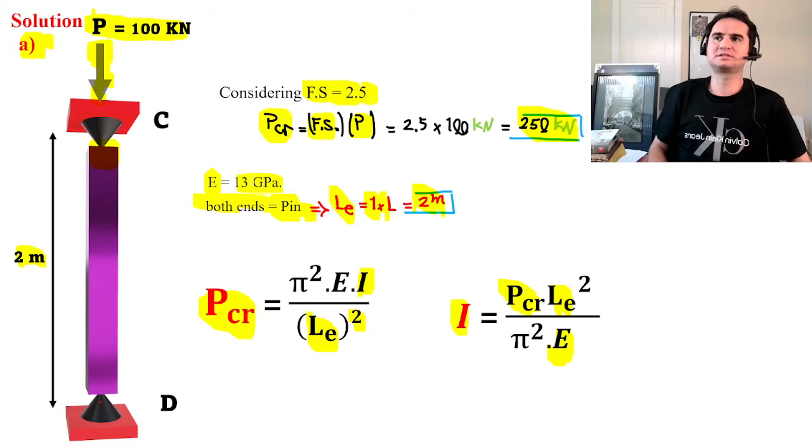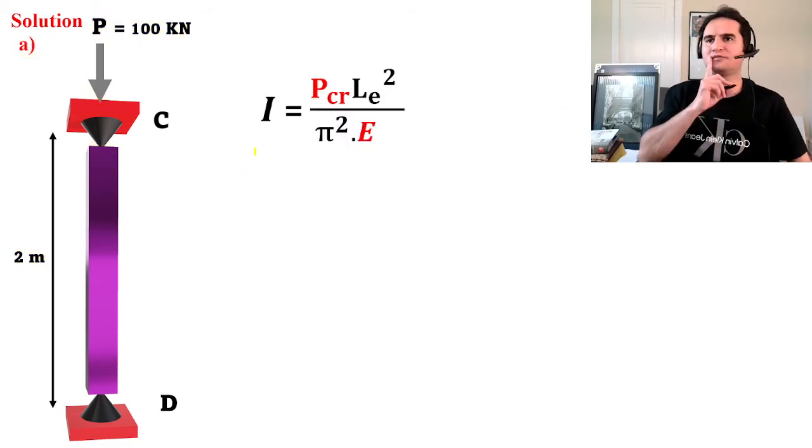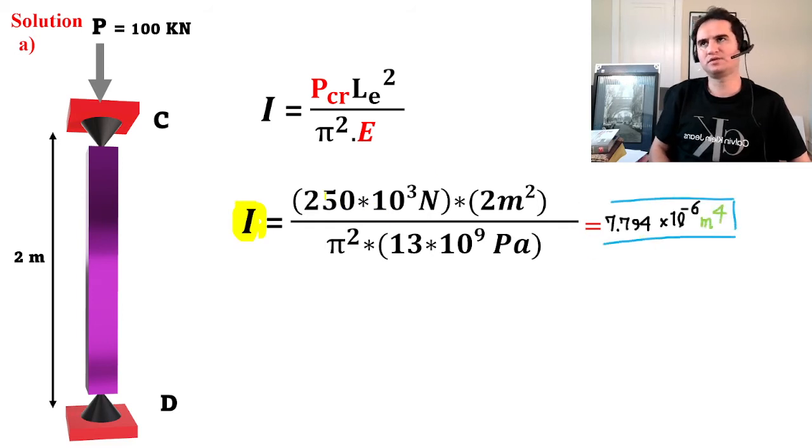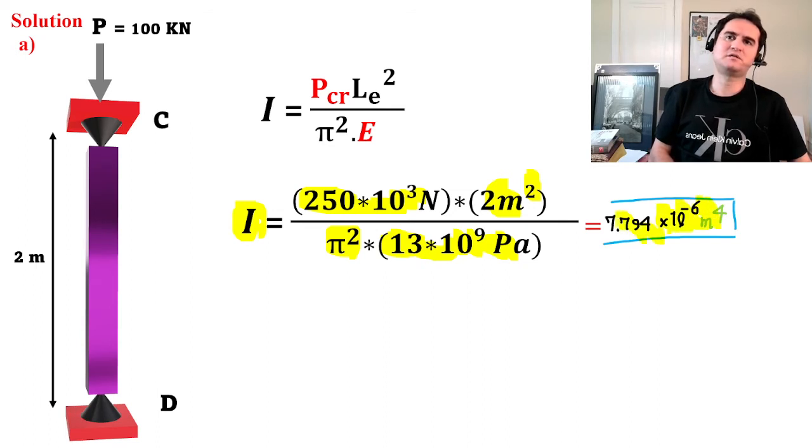We already know what P_critical is, we do know what effective length is, and modulus of elasticity is given. We just replace in the formula. If you replace the critical load times effective length squared over π² times modulus of elasticity in terms of pascals, you can get a moment of inertia of 7.71×10⁻⁶ meter to the fourth.